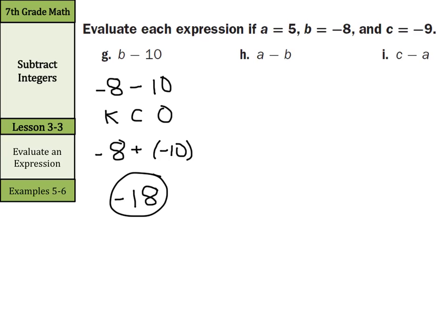For A minus B where A equals 5 and B equals negative 8: substitute to get 5 minus negative 8. Keep change opposite: keep the 5, change subtraction to addition, and the opposite of negative 8 is positive 8. Same signs — both positive — so 5 plus 8 equals positive 13.